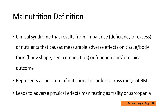The first is the definition of malnutrition. Malnutrition is a clinical syndrome that results from either deficiency or excess of nutrients that causes measurable adverse effects on tissue, body composition, and results in poor clinical outcomes in patients. It represents a spectrum of nutritional disorders across the body mass — it could be obesity, sarcopenia, or frailty — which in turn have an adverse effect on the clinical profile of the patient.